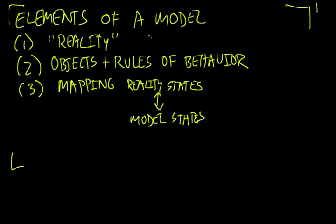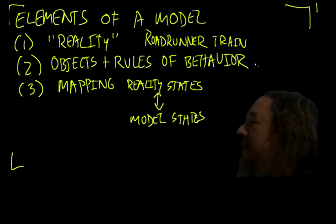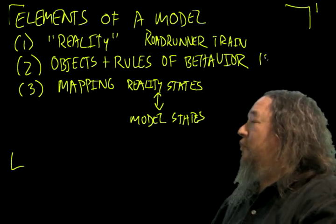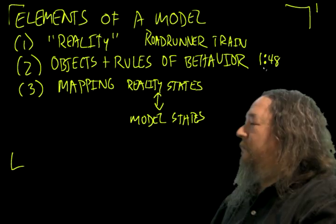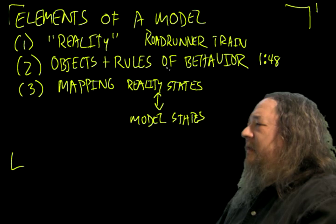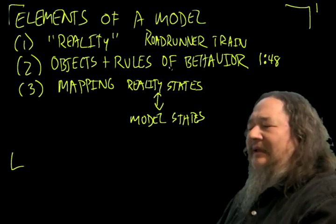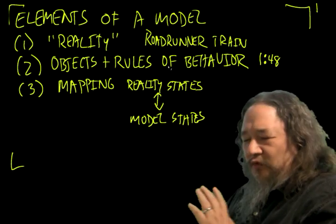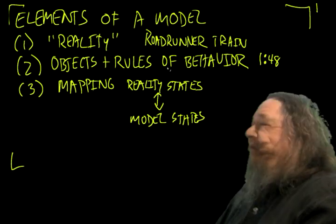And so we can look at, we have a real train. We have the Roadrunner sitting outside Placidas, getting ready to head to Santa Fe. In my model, when I had trains, when I had Lionel trains, I had O gauge trains, which were scaled down 48 to 1. So, 4 feet, 1 inch. And they have the rules of behavior, how they interact. Lionel trains are all electric. They rolled down the tracks. They did whatever they did. Then we have the mapping.